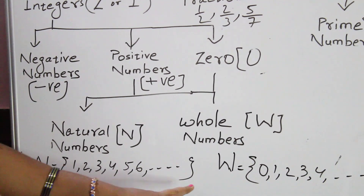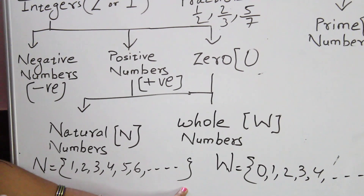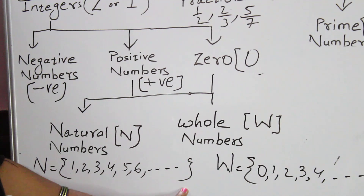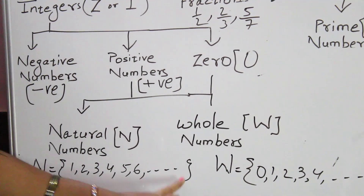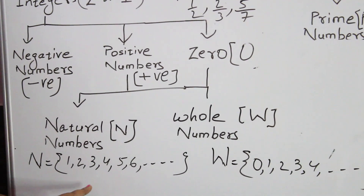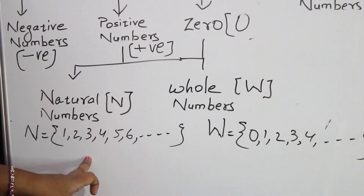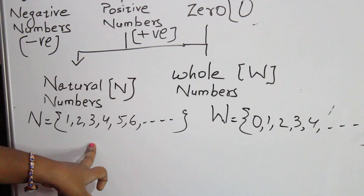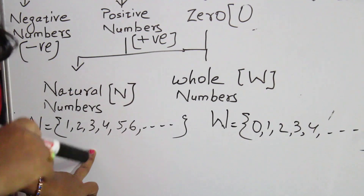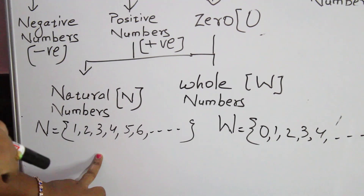The largest natural number cannot be determined. There are infinite natural numbers.